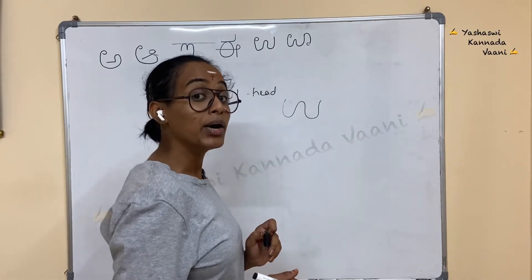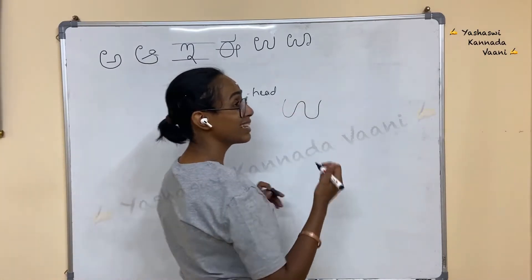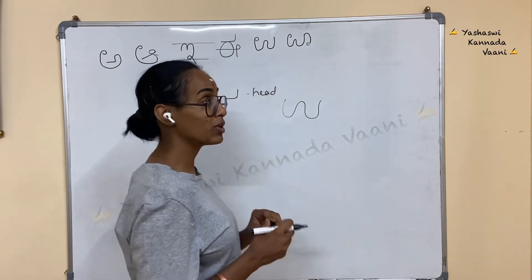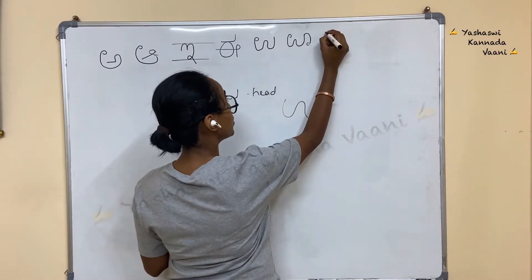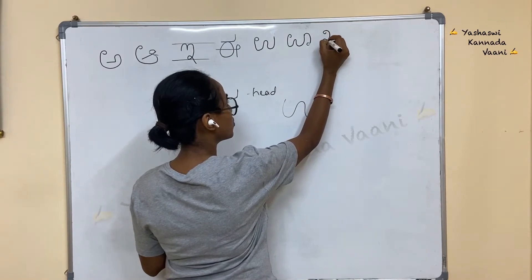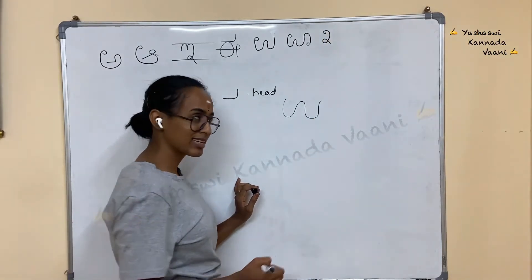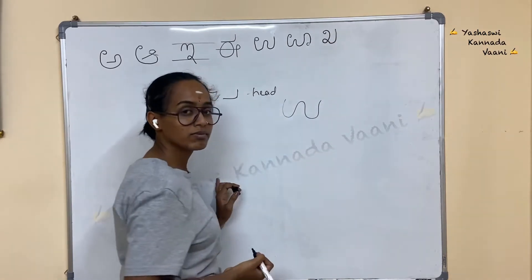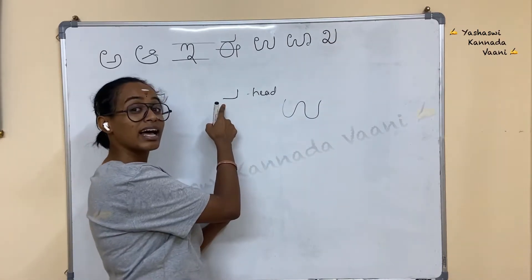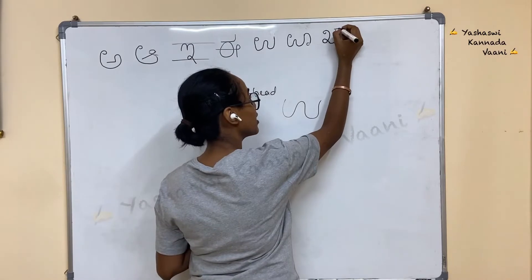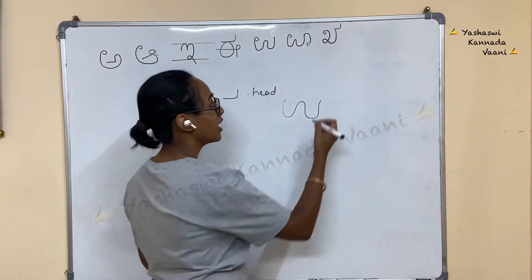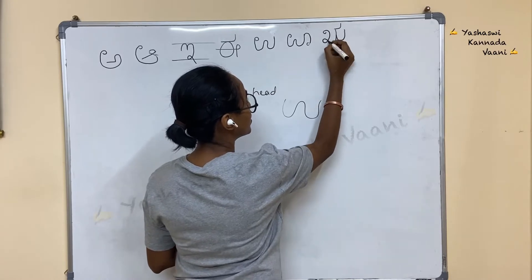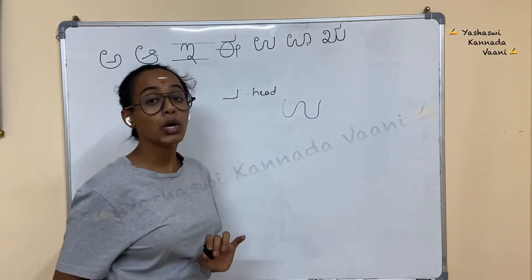Next letter is Ru (ಋ). In Hindi it is called Ri, but in Kannada it is called Ru. Remember letter 2 — we also write letter 2 like this. Then go up. Then put a tale — head. Again put this one. This is letter Ru (ಋ).